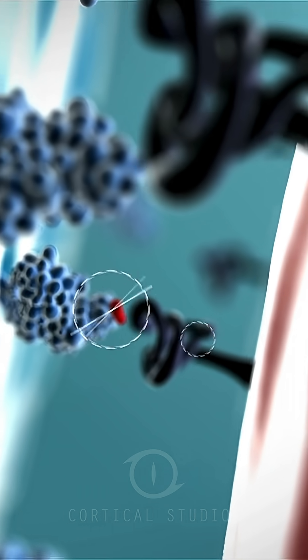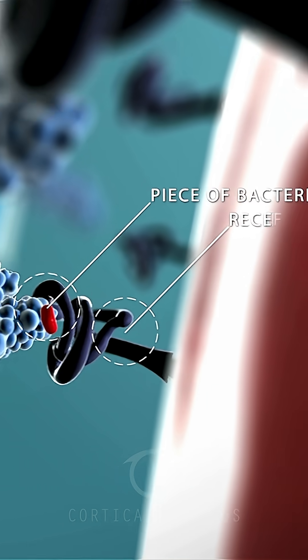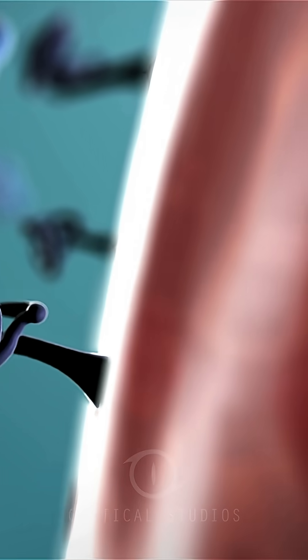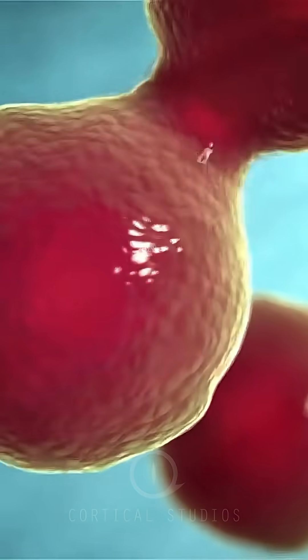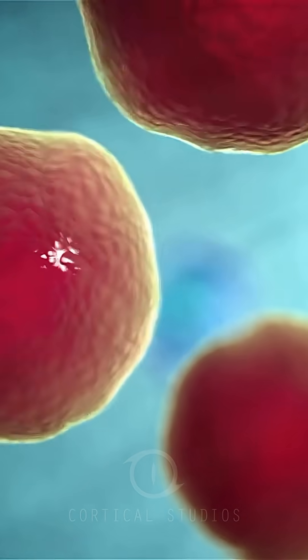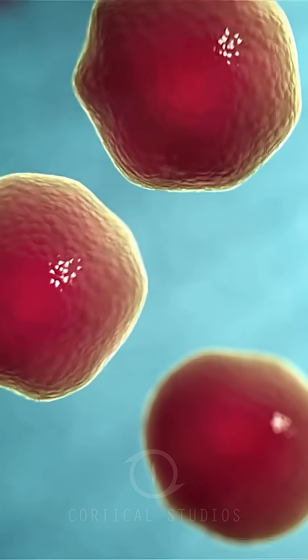T cells recognize the bacterium pieces on the outside of the macrophage. The T cells bind themselves to those pieces of bacterium on the macrophage, and they become active. The B cells also become active.